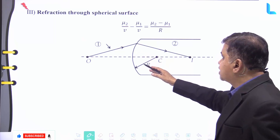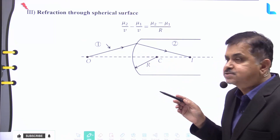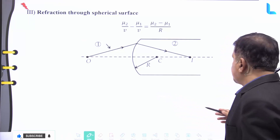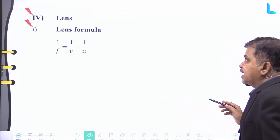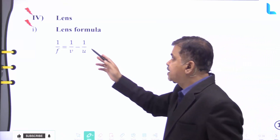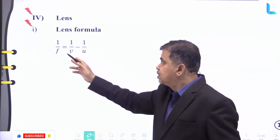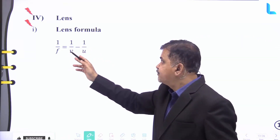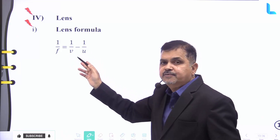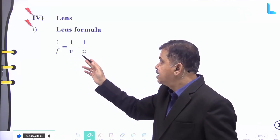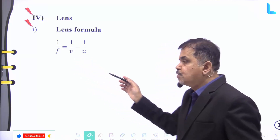Refraction through a spherical surface is given by μ₂/v − μ₁/u = (μ₂−μ₁)/R, where O is the object, I is the image, R is the radius of curvature, and C is the centre of curvature. The lens formula is 1/f = 1/v − 1/u.